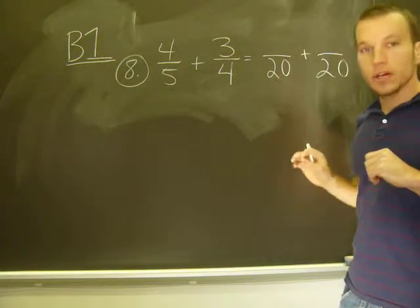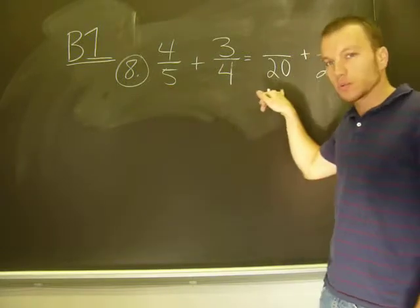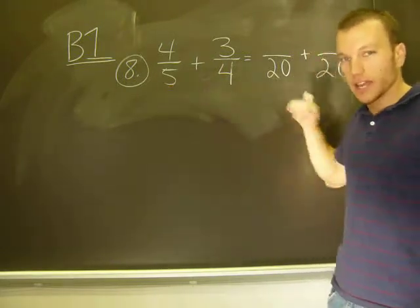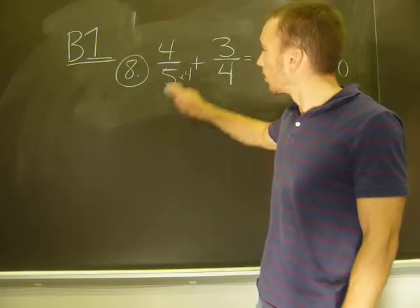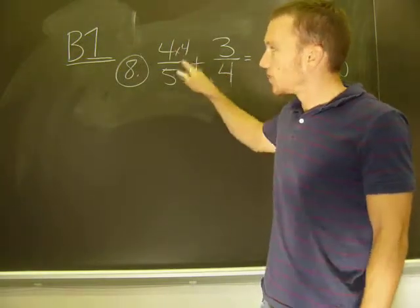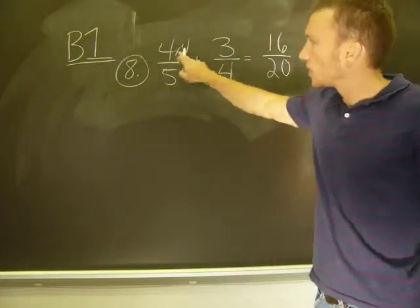Now, how do I get the new numerators? In order to get the numerators, I have to decide what I did to get from 5 to 20. What did I multiply 5 by to get the least common denominator? I multiply by 4, so I have to do the same to the numerators so I don't change the fraction. Alright, 4 times 4 is 16.